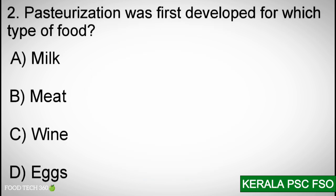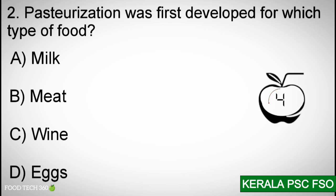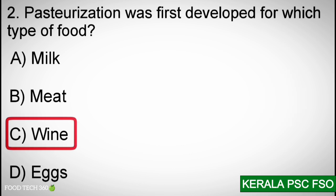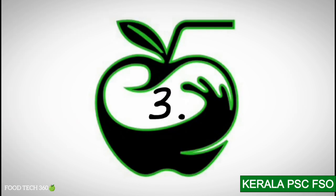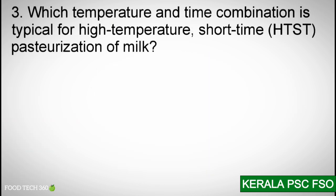Question number two: Pasteurization was first developed for which type of food? Options: A) Milk. B) Meat. C) Wine. D) Eggs. Correct answer: C) Wine.